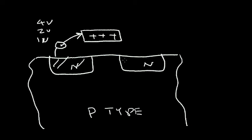Let's presume that these N regions are at a ground potential. This is both at ground. And when we apply a voltage to this gate electrode, we develop an electric field below the gate.